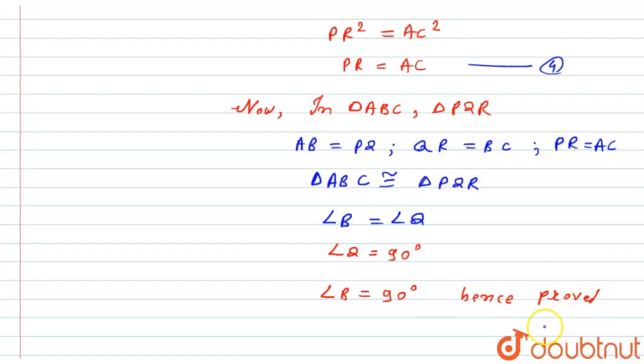Hence it is proved that in this right angle triangle the angle is also 90 degrees. I hope you liked the solution, thank you.